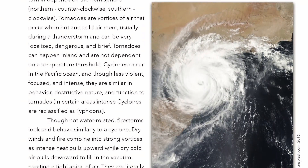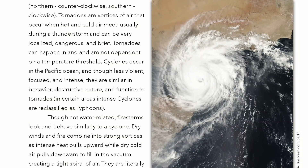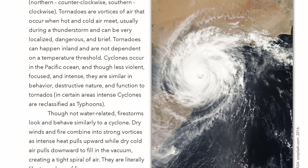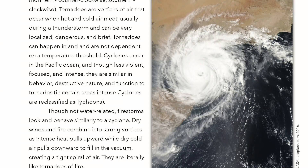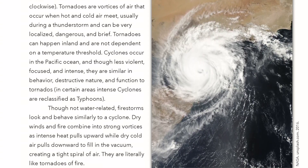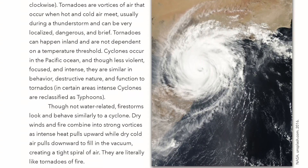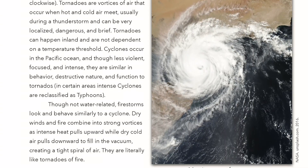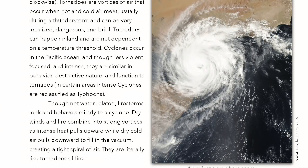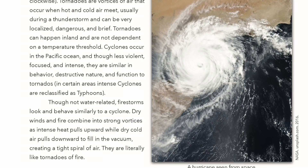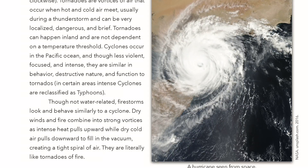In certain areas, intense cyclones are reclassified as typhoons. Though not water-related, firestorms look and behave similarly to a cyclone. Dry winds and fire combine into strong vortices as intense heat pulls upward, while dry cold air pulls downward to fill in the vacuum, creating a tight spiral of air. They are literally like tornadoes of fire.